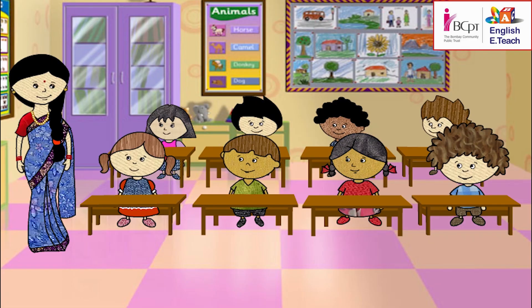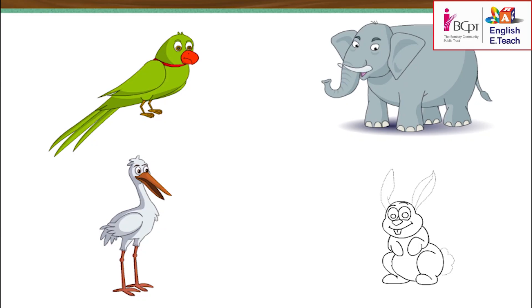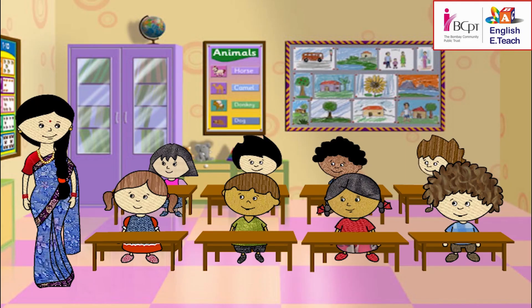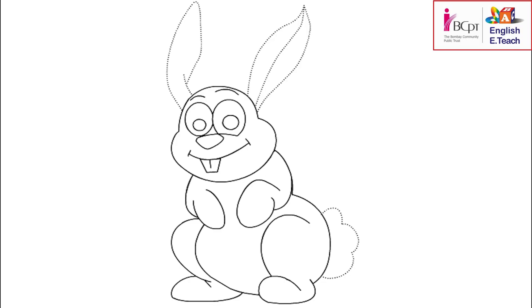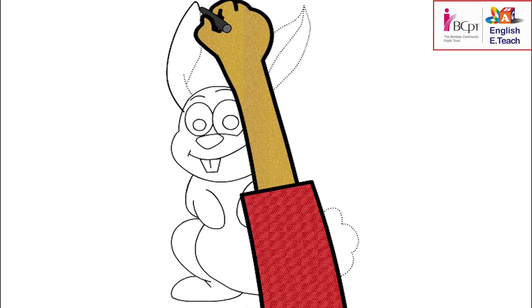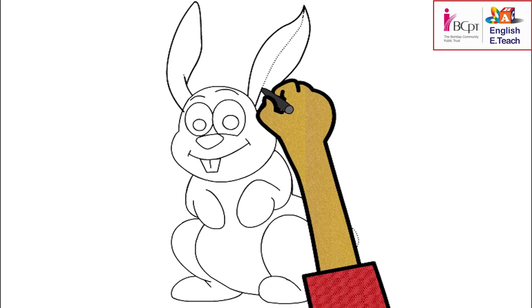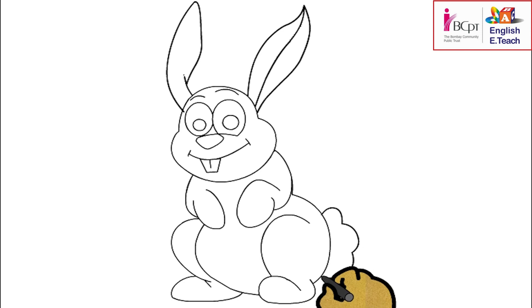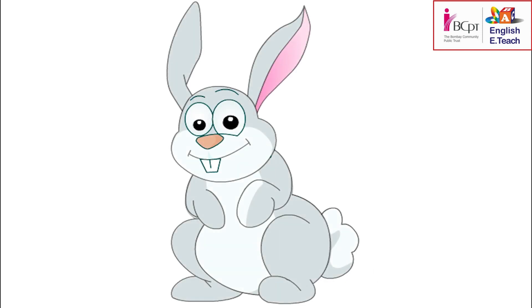An animal with two long ears and a short tail. A rabbit. Excellent. A rabbit has two long ears and a short tail.